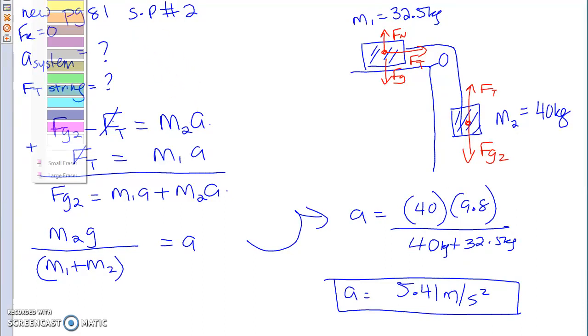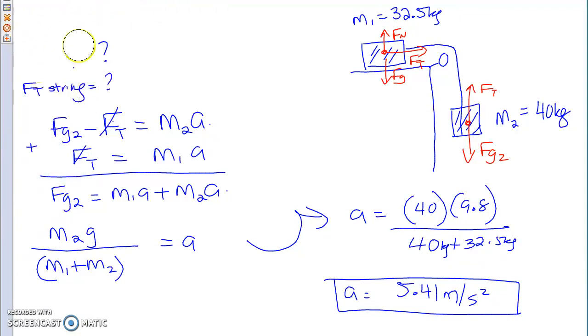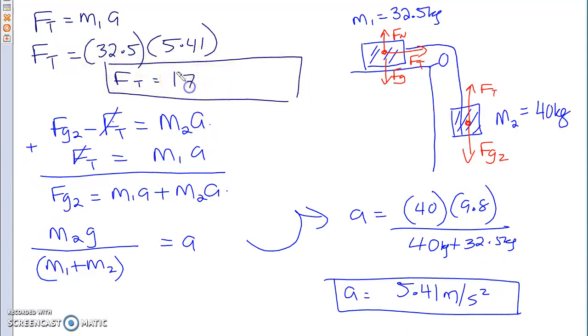The second question is looking to figure out what my tension in my string is. To solve my tension, I have two equations to solve. I can either do this one or I can do this one. I'm going to do the second one. FT equals to mass 1 times acceleration. FT equals to mass 1, which is 32.5 times 5.41, which is your acceleration. What does your tension come out to? 175.8 Newtons. Tension is upward here, forward here. Are we okay? Any questions, concerns?